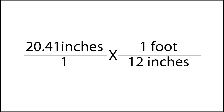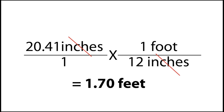We're going to multiply by 1 foot over 12 inches. Since 1 foot equals 12 inches, this is essentially multiplying by 1 — it just lets us cancel out the inches. When we cross-multiply, our inches cancel out and we're left with our answer in feet. So 20.41 divided by 12 gives us 1.70 feet — that's how much distance is covered every time the anemometer spins around.